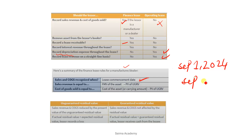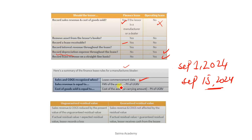When you actually hand over the asset — suppose on September 15th — that is the commencement date. So sales revenue and cost of goods sold are recognized on the lease commencement date. Sales revenue equals the fair market value of the asset — whatever fair market value the asset has.